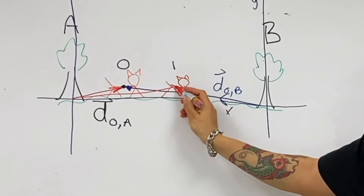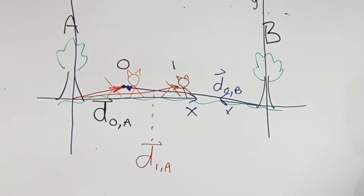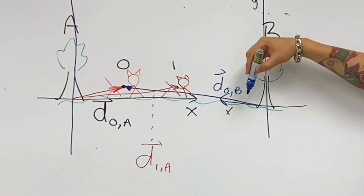We can call the second position vector d̂₁A. And again, the position vector from the second tree is going to be different as well. We can call this d̂₁B.